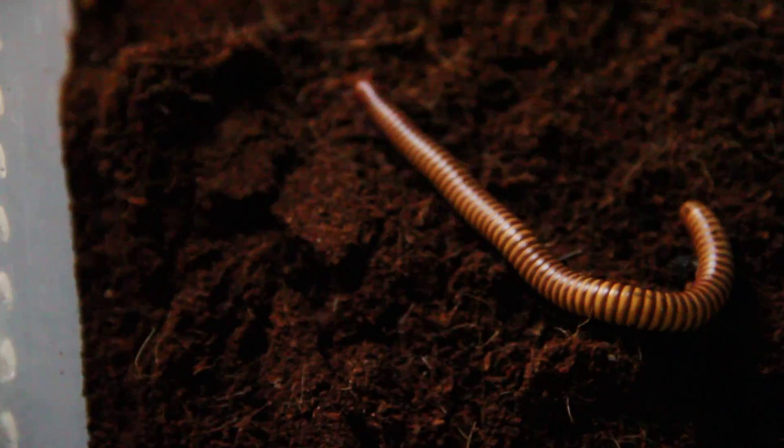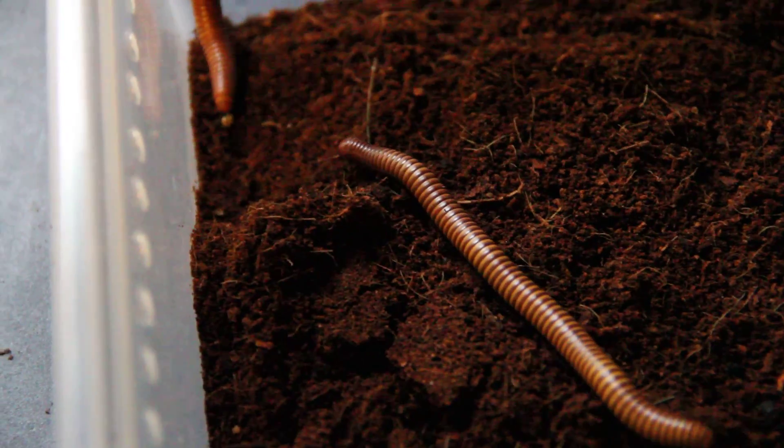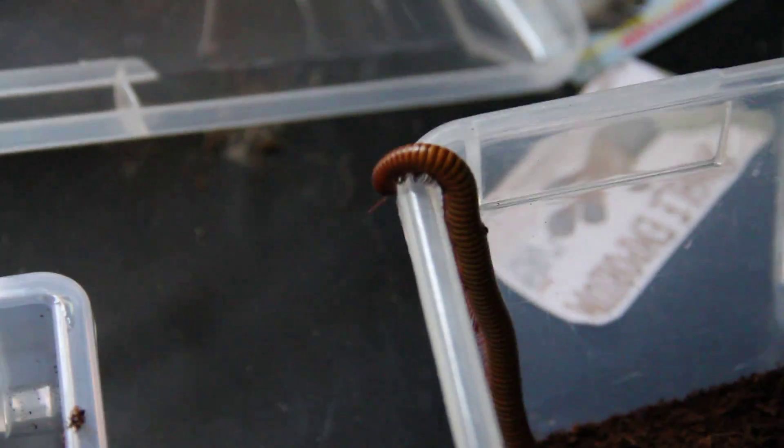So this is the desert millipede. It's native to America and this is about the size that they get. They don't get too much bigger than this.